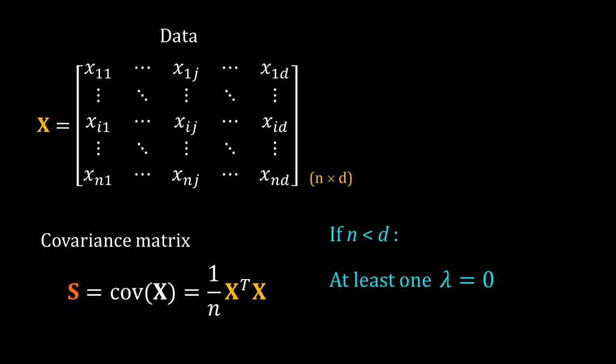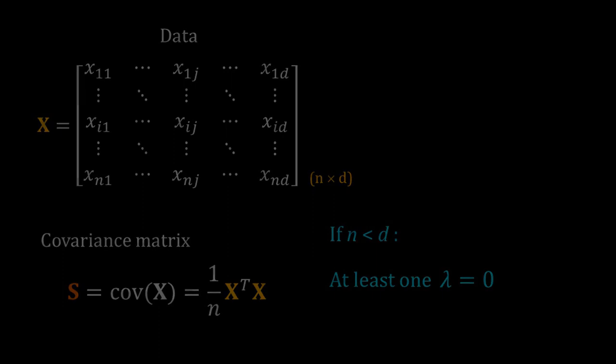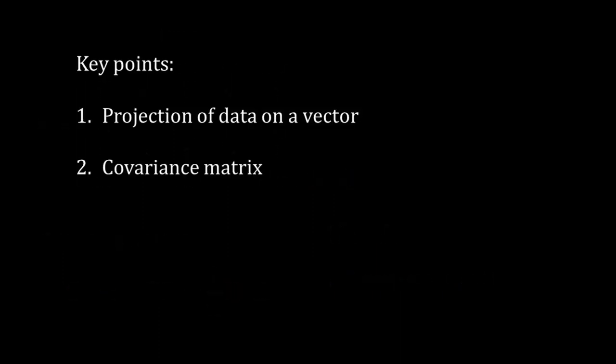The mathematical formulation for PCA is still half cooked. I will complete that in next video. But I will prefer that you go through what we discussed in this video a few times. Here we have learned two important topics: projection of data on a vector, particularly on a unit vector, and covariance matrix. Take some time to understand these two with clarity and then move to the second video. Thank you.